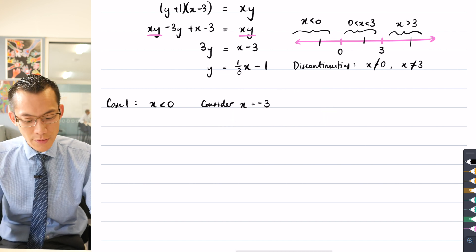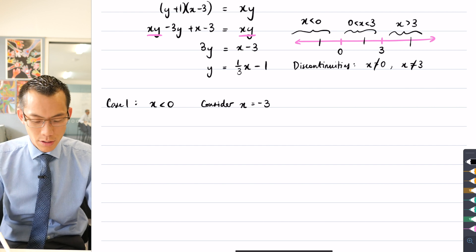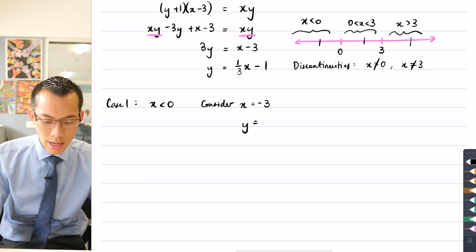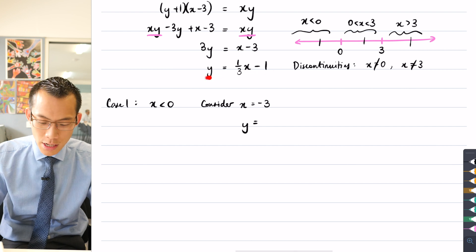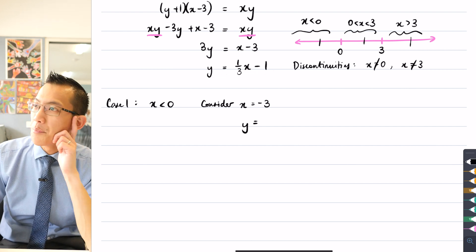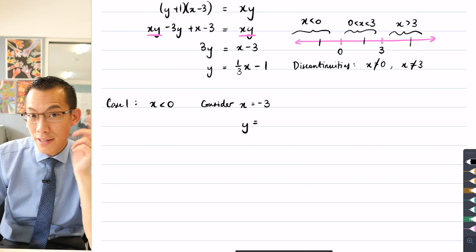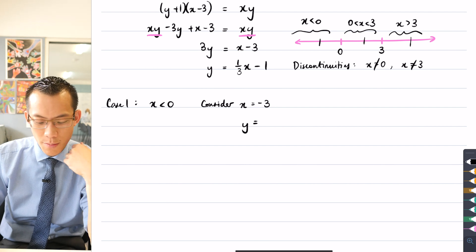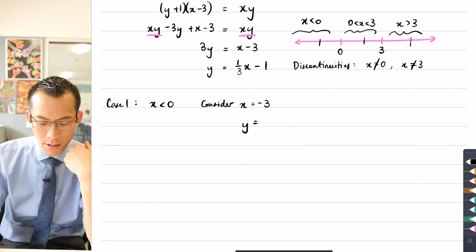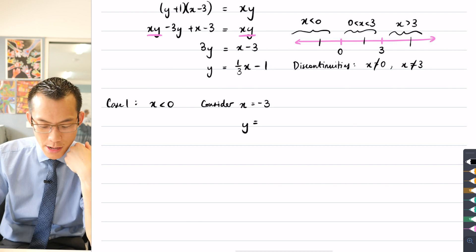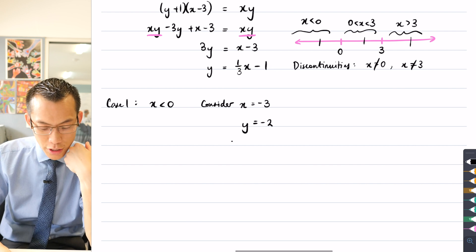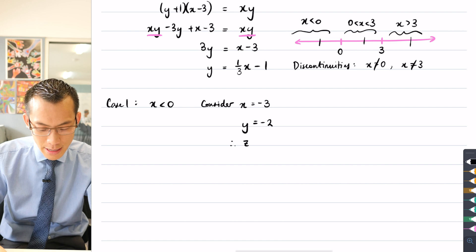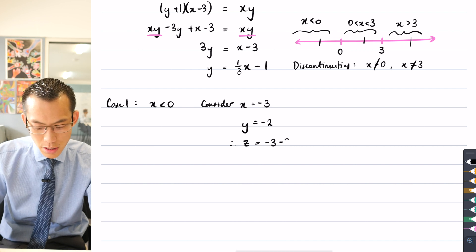And what I do is I take that x value and I need a y value that goes with it. So I'm going to substitute x equals negative three into this equation here. So that gives me a third times negative three. This is why I chose the value because it's going to cancel my denominator. That's negative one minus one, negative one minus one equals negative two. So for this particular value of x and y, I get z equals minus three minus two i.